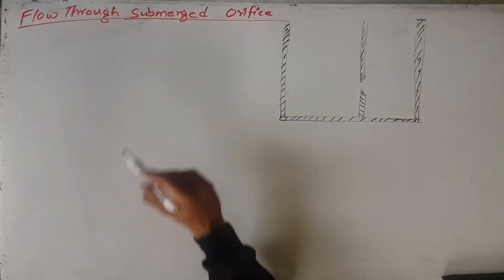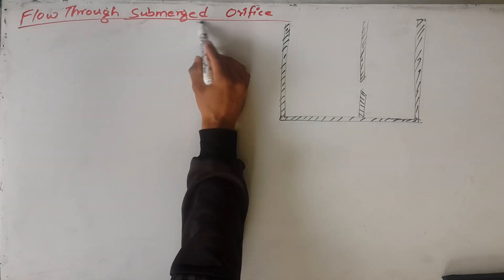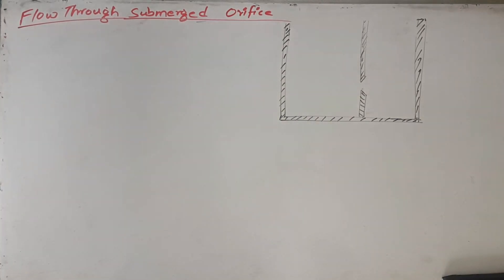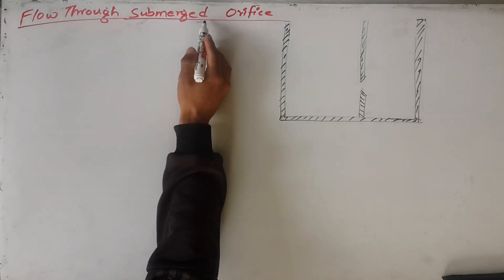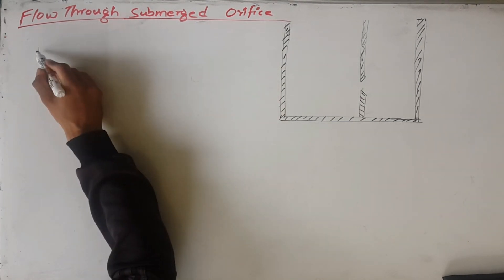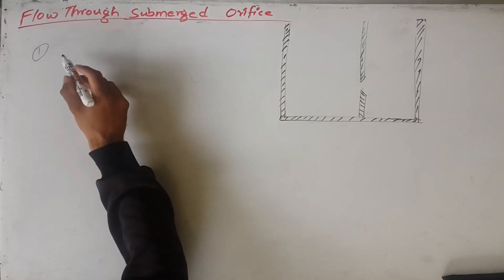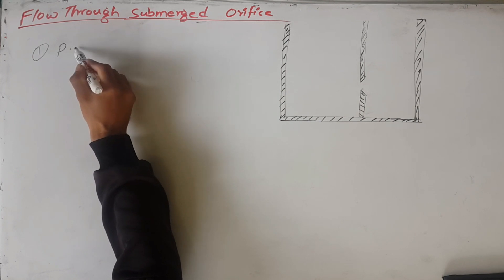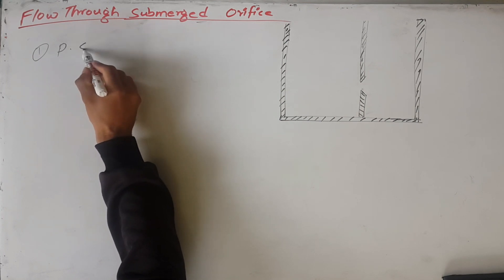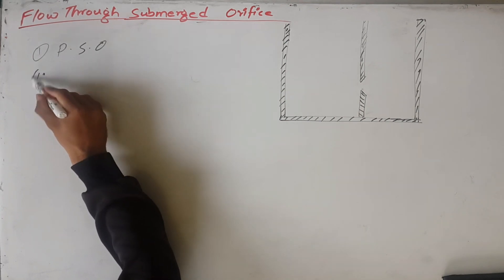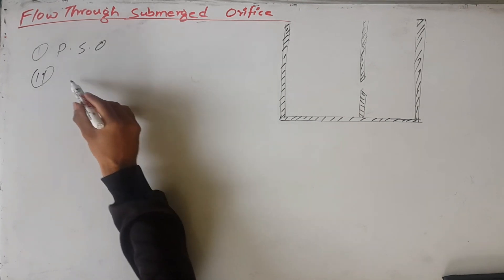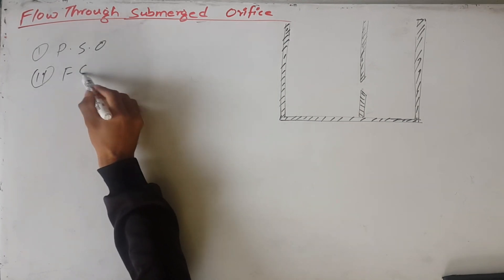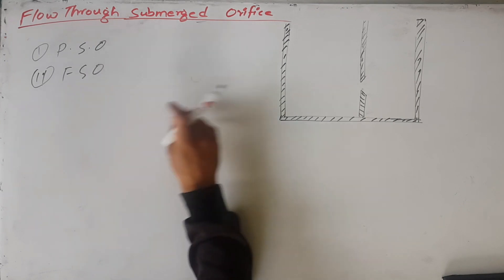Today we will study about proof through submerged orifices. We already discussed in the previous video that submerged orifices are of two types: one, partially submerged orifices, and second, fully submerged orifices.